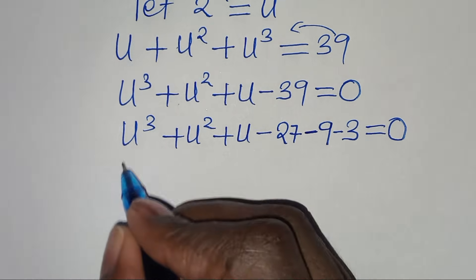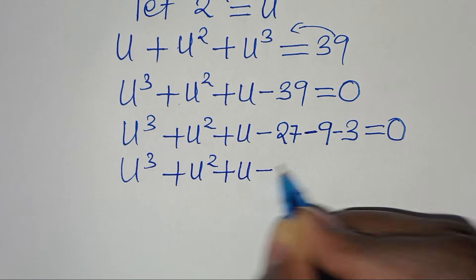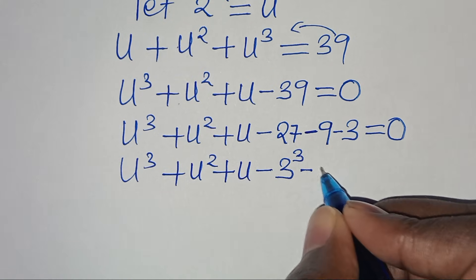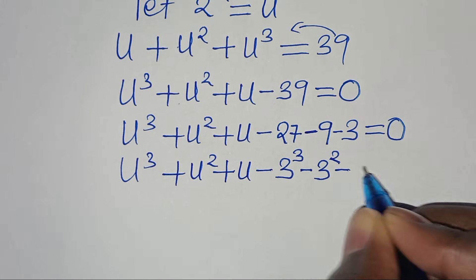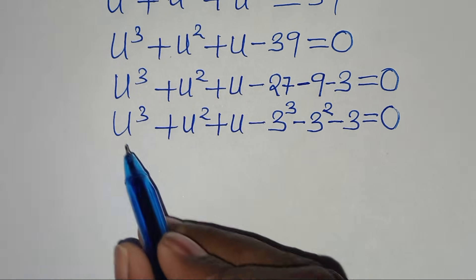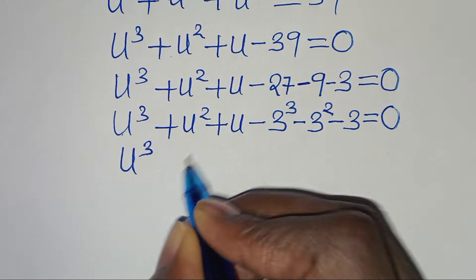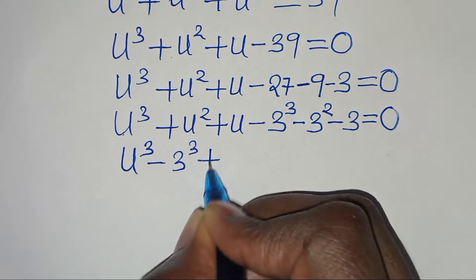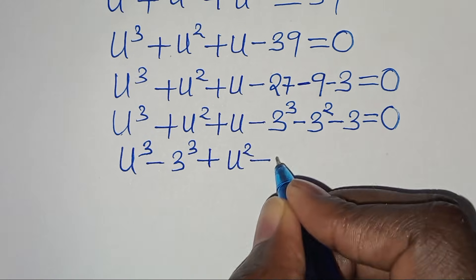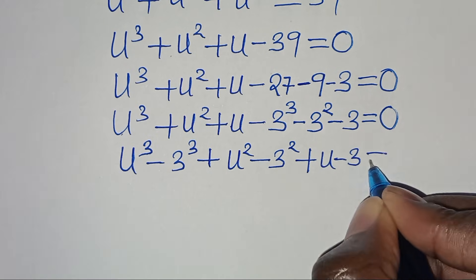So we have u cubed plus u squared plus u, subtract 27 — where 27 is the same thing as 3 to the power of 3 — then subtract 9, which is 3 to the power of 2, then minus 3, this is equal to 0. We can group this as (u³ - 3³) plus (u² - 3²) plus (u - 3), this is equal to 0.